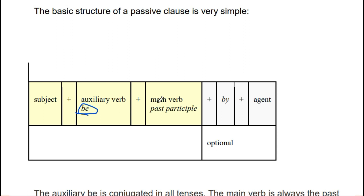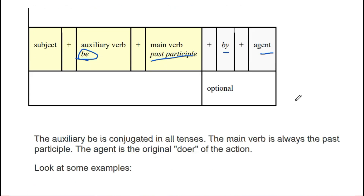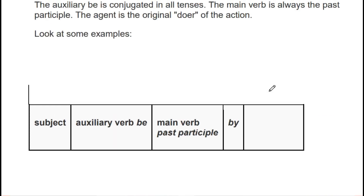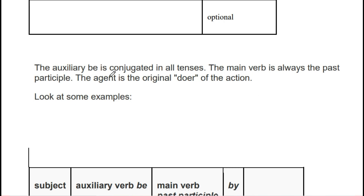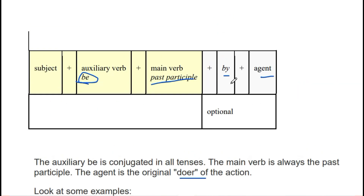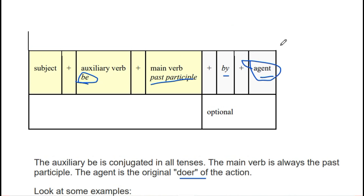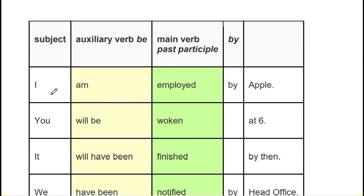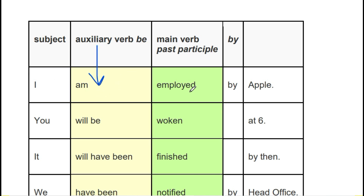The main verb always comes in its past form. Then we use 'by' and bring the object over. That is our simple formula. The auxiliary is conjugated in all the tenses; the main verb is always the past participle. The agent is the original doer of the action — it is taken from its original position and placed at the end. For example: subject 'I,' auxiliary 'am,' main verb 'employed,' and 'by Apple' — Apple here is a company, not a fruit.